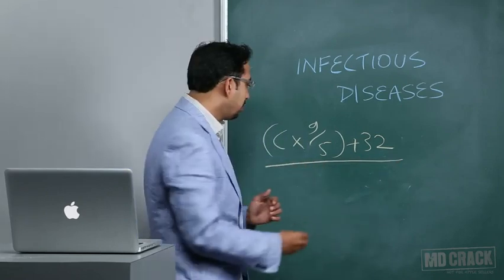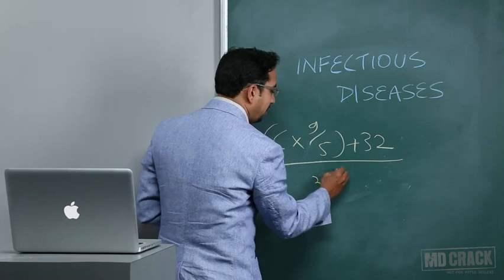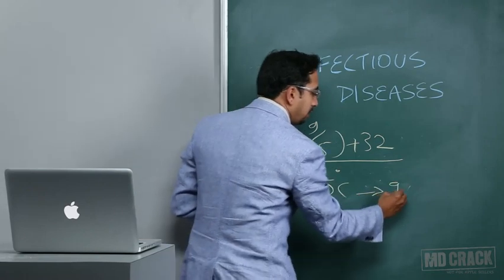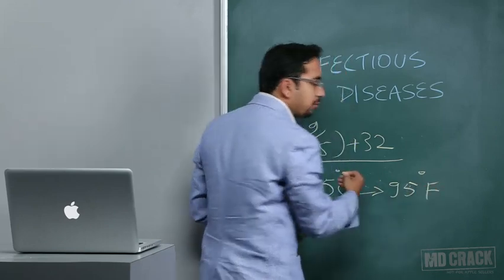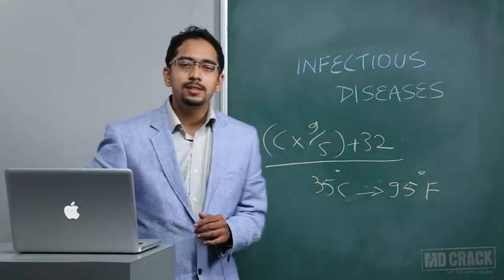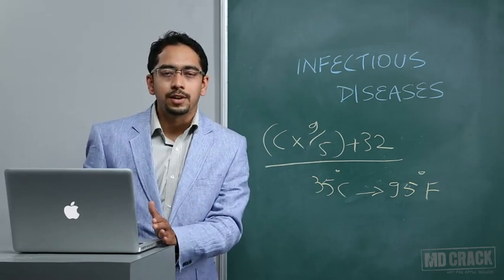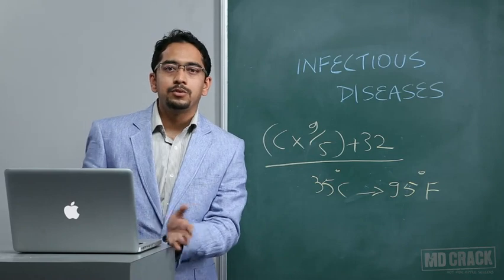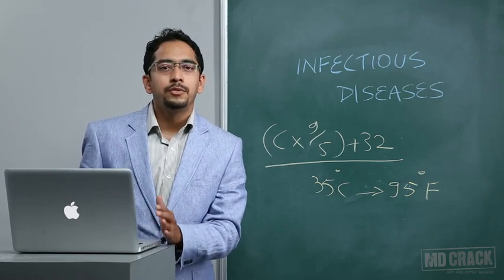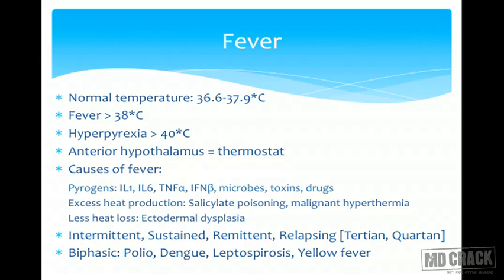For example, 35°C converts to 95°F; 36°C is 96.8°F; 37°C is 98.6°F; and 40°C is 104°F. Fever is defined as temperature above 38°C. Hyperpyrexia is defined as temperature above 40°C. The cause of fever is excessive heat production or reduced heat dissipation.